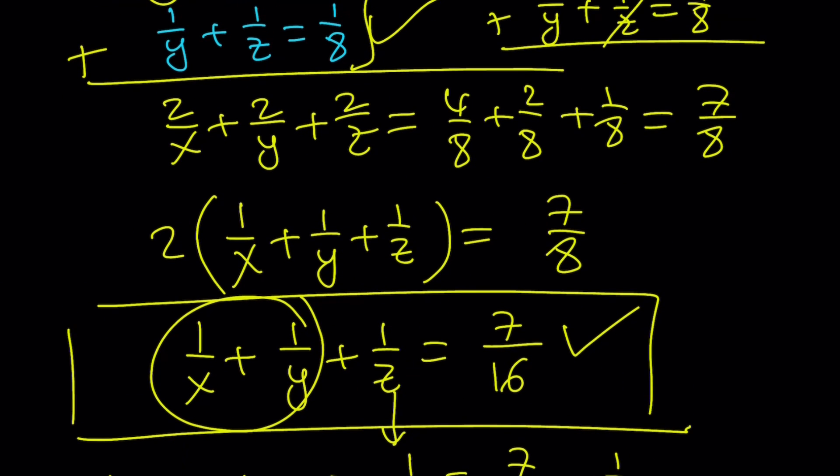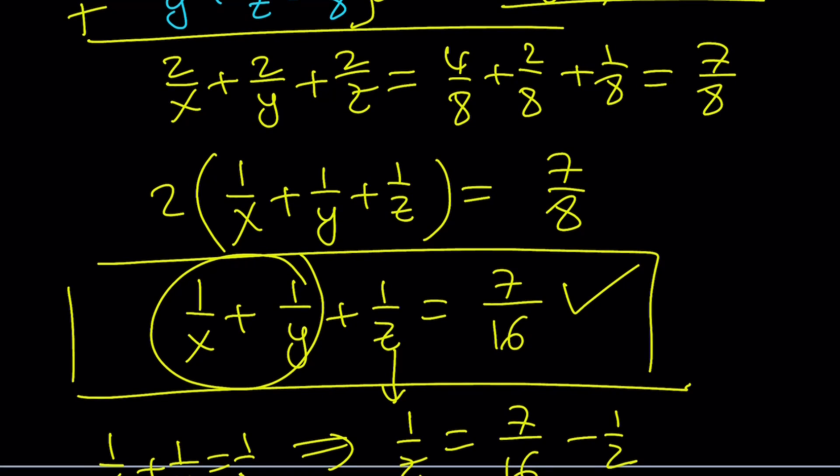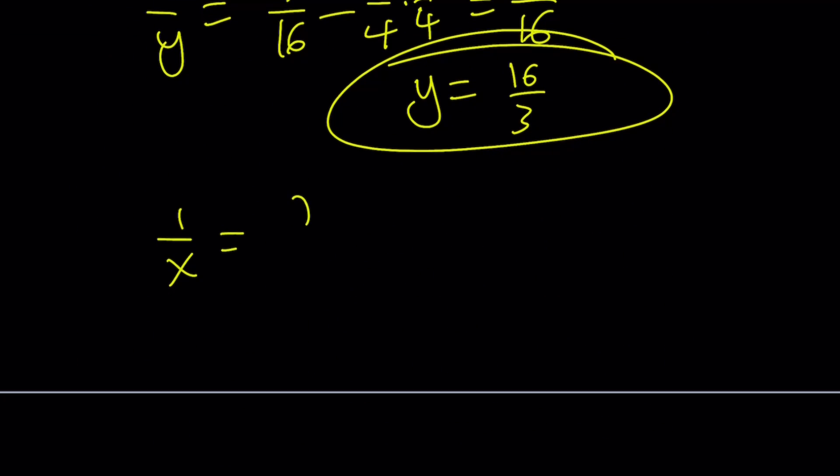And then the last one is going to give us, if we subtract it from the one over x plus one over y plus one over z, that's going to give us one over x. So, one over x is going to be seven over sixteen minus one over eight, which can be written as two over sixteen. That's going to be five over sixteen. If you flip, x is going to be sixteen over five.